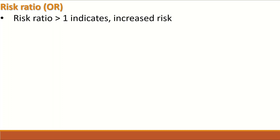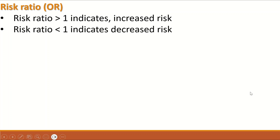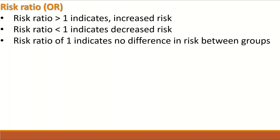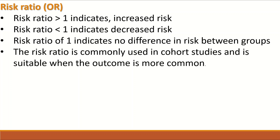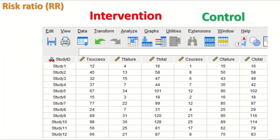A risk ratio greater than one indicates an increased risk, as it indicates a positive association. A risk ratio less than one indicates a decreased risk, and a risk ratio of one indicates no difference in risk between the groups. The risk ratio is commonly used in cohort studies and is suitable when the outcome is more common.